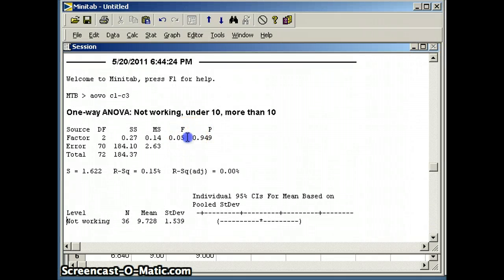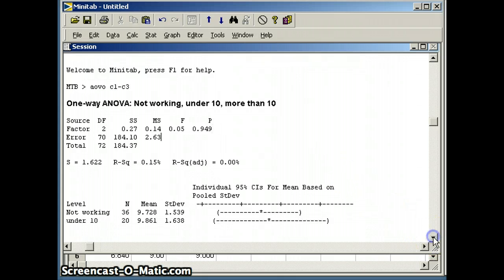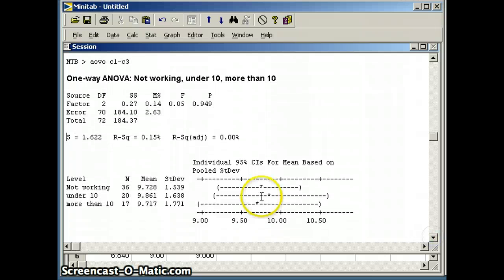So our F statistic here is 0.05, that is a very small F statistic. Our P value is 0.949, that's a very large P value. In the case of a very large P value, we know our conclusion has failed to reject H naught. Now, let's again take a look at our confidence intervals. Notice all of these confidence intervals overlap.